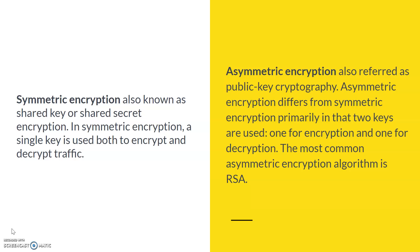Both are encryption methods. Symmetric key is also known as a shared key or secret key. In symmetric key encryption, a single key is used for both encrypting and decrypting traffic. The same key that encrypts your content is shared with your peer, and the peer uses that same key for decryption. There is only a single key, commonly used by both the sender and receiver.